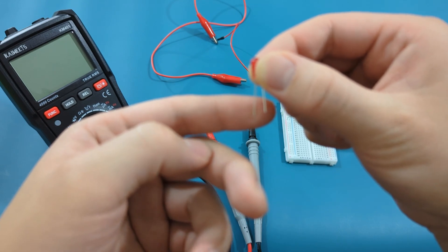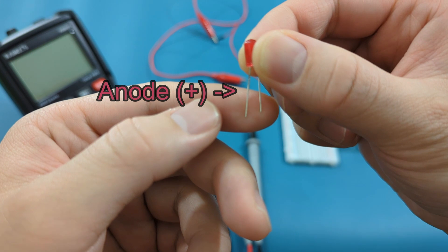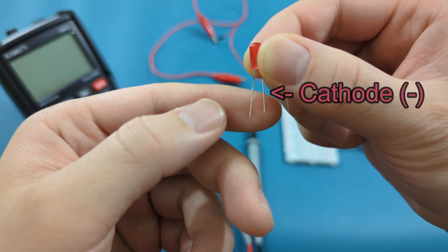As you can see, the left side is the anode or the positive terminal. The right side is the cathode or the negative terminal.